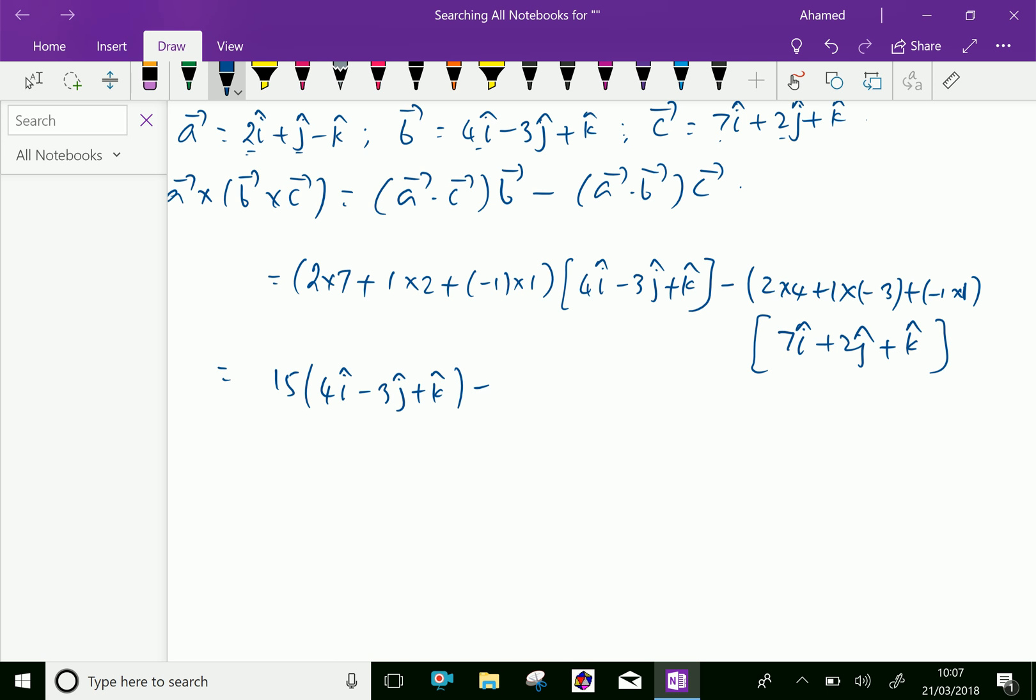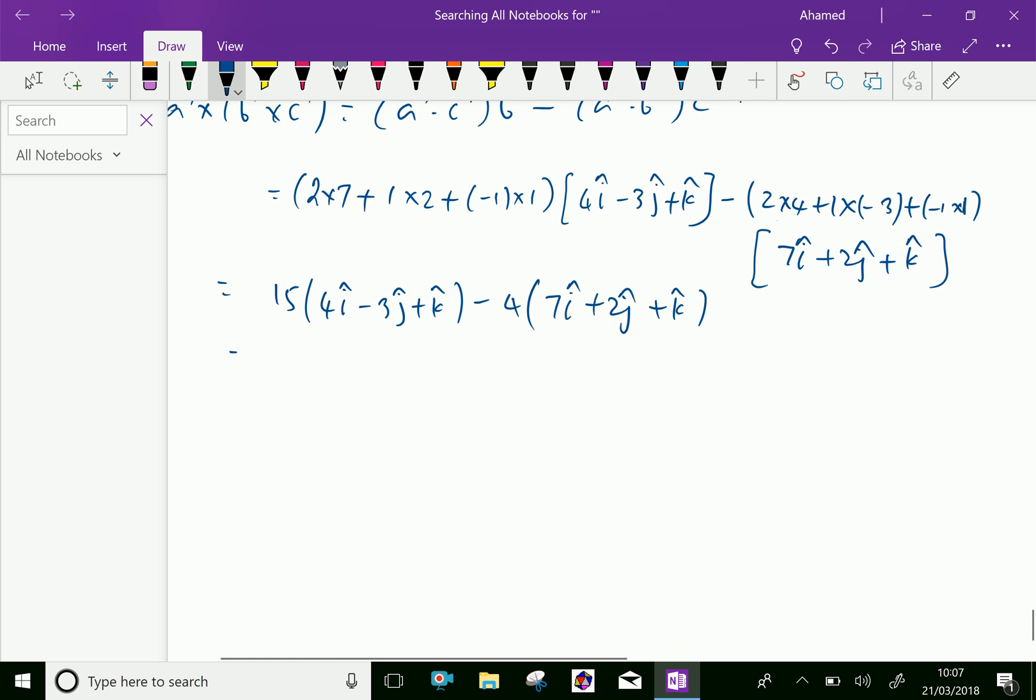Then minus: 2 into 4 is 8, plus minus 3 is 5, minus 1 is 4, times 7i plus 2j plus k. Now we multiply to get 60i minus 45j plus 15k minus 28i minus 8j minus 4k.